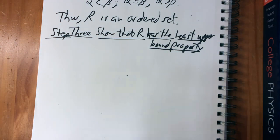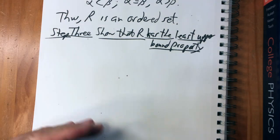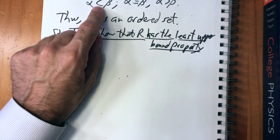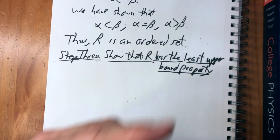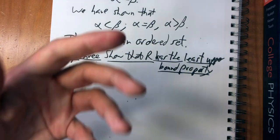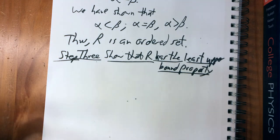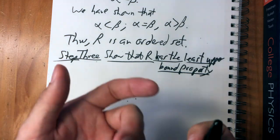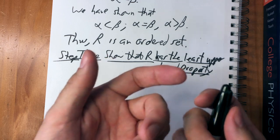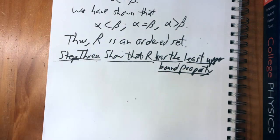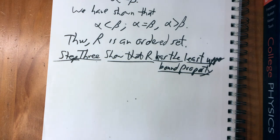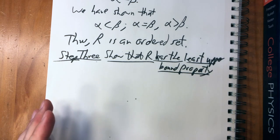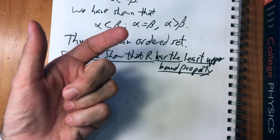And yet now we're going to show that these subsets of rational numbers not only have an order but also have a least upper bound property. It's mind-boggling because we're not talking about numbers — just subsets — and yet we end up with a set that has the least upper bound property.